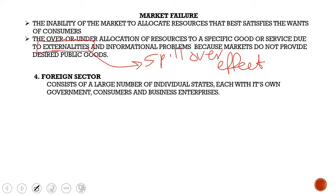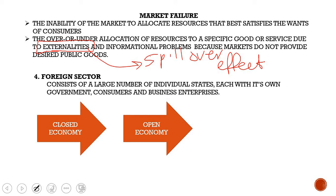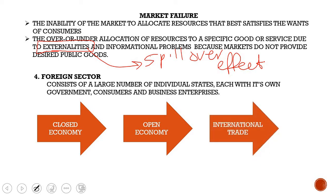Then you have the foreign sector. There are two types of economies: an open economy and a closed economy. An open economy includes a foreign sector, which consists of a large number of individual states, each with its own government, consumers, and business enterprises. Basically, this is where international trade takes place.